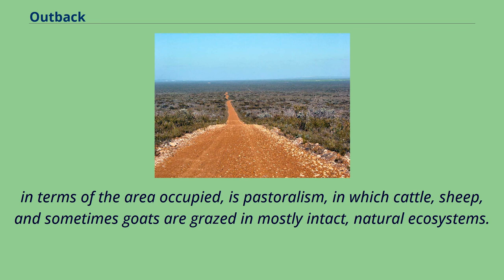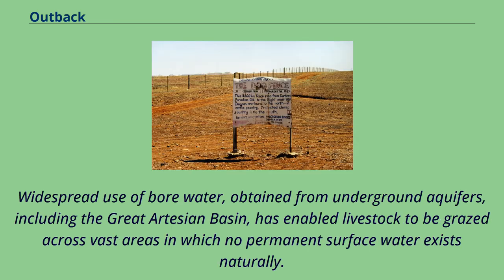The largest industry across the outback, in terms of the area occupied, is pastoralism, in which cattle, sheep and sometimes goats are grazed in mostly intact natural ecosystems. Widespread use of bore water, obtained from underground aquifers including the Great Artesian Basin, has enabled livestock to be grazed across vast areas in which no permanent surface water exists naturally.